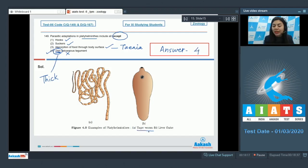The Taenia solium, that is your tapeworm, and liver fluke is shown here. The tapeworm takes nutrition directly through the body surface by diffusion. Whereas, this part of liver fluke is oral sucker, which helps it to suck food from host body.